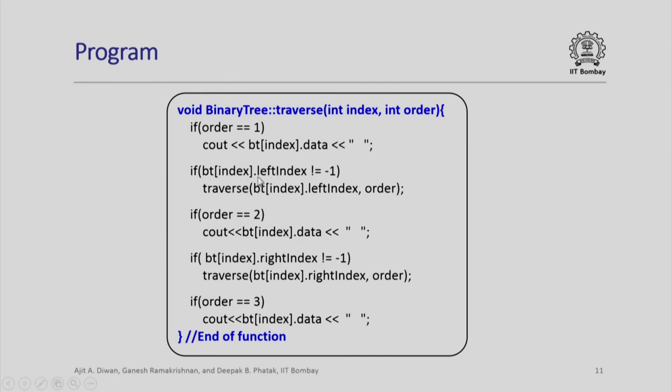If left index is not minus 1, that means there is something on the left, then I will say traverse bt index dot left index order. So you can see that I am calling this traversal again depending upon whether the left index is minus 1 or not. Same thing about the right index that we will do.